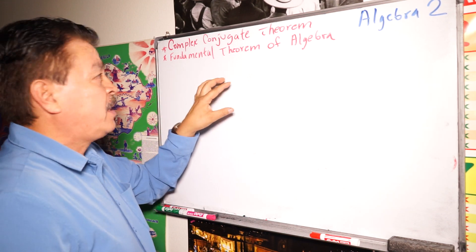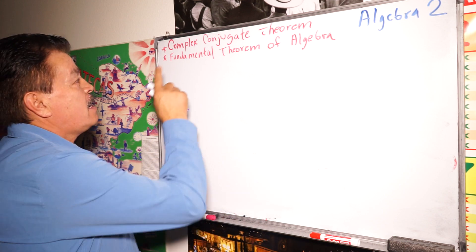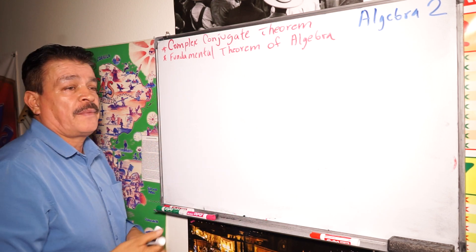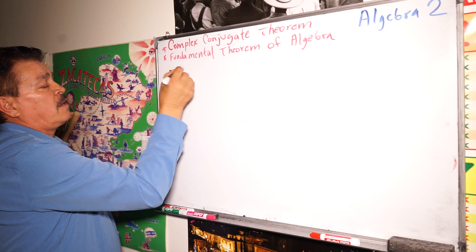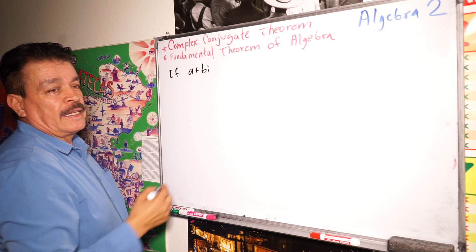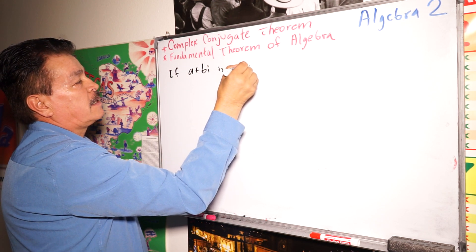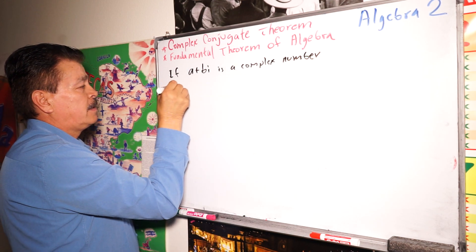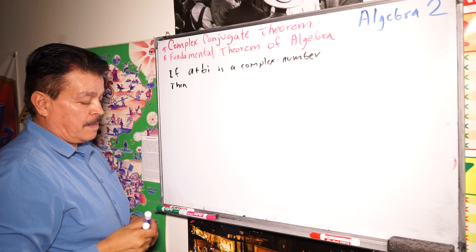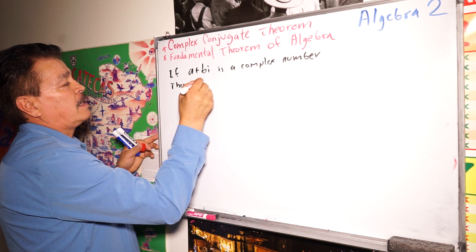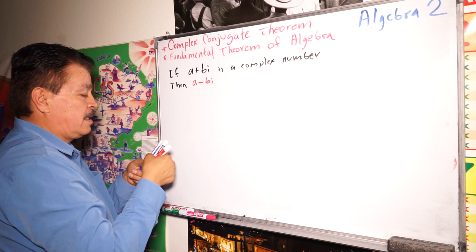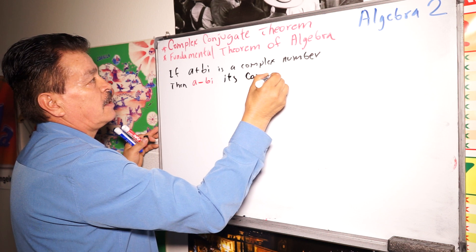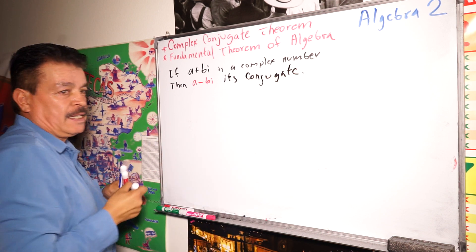We have these two little topics for today. It's a very simple class. Complex conjugate theorem, and then the Fundamental Theorem of Algebra. In the first case, if a plus bi is a complex number, then a minus bi is its conjugate.